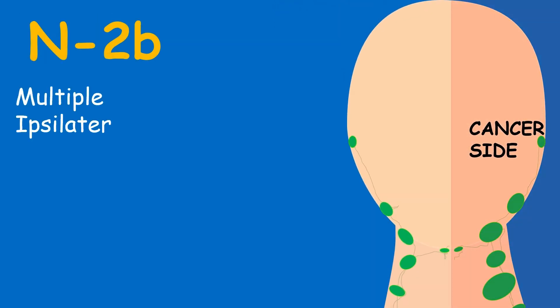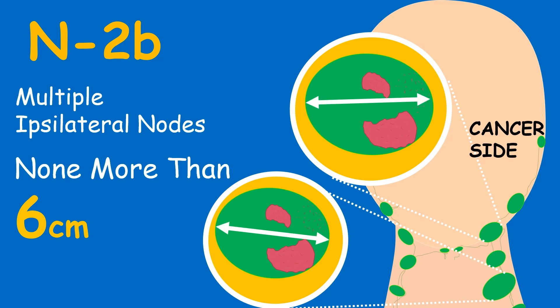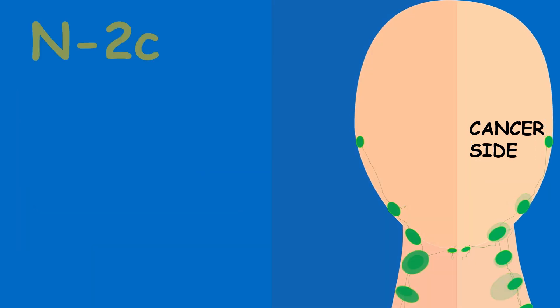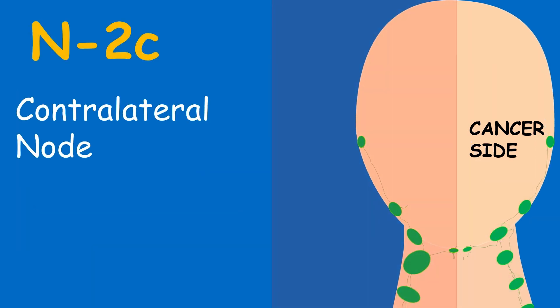In N2B, there are multiple ipsilateral lymph nodes involved while none of them is more than 6 centimeters in size.